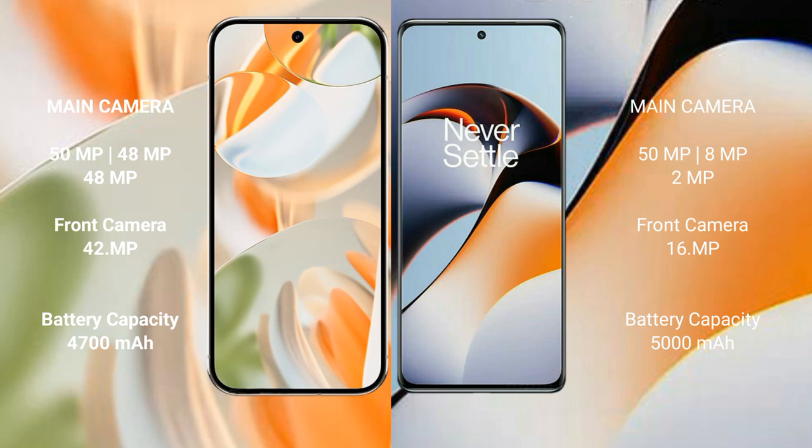The Google Pixel 9 Pro has a 4700mAh battery with 27W fast charging support. The OnePlus 11R has a 5000mAh battery with 100W fast charging support.